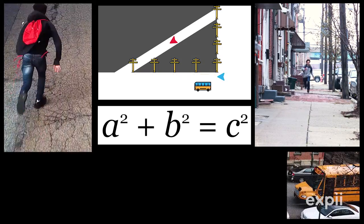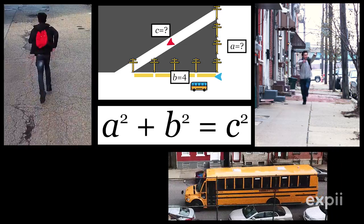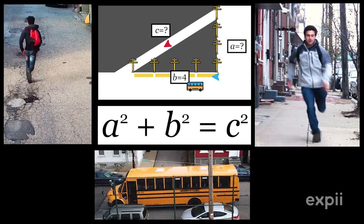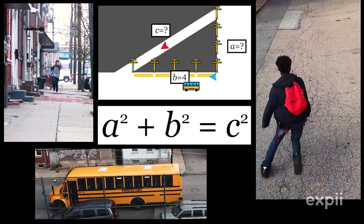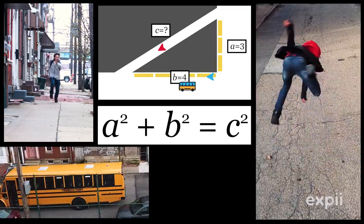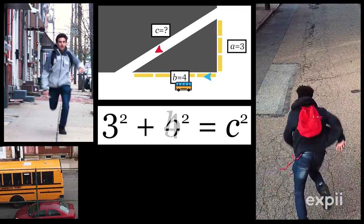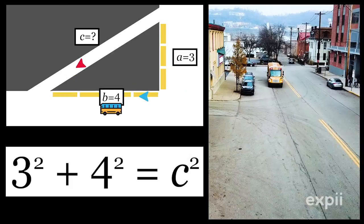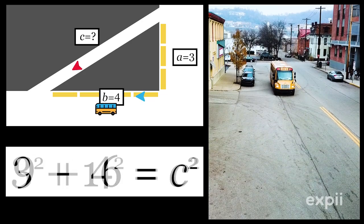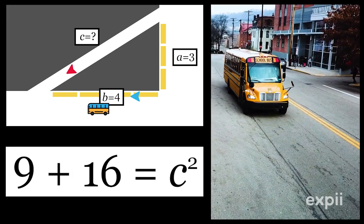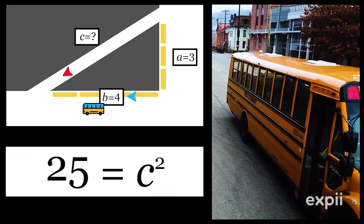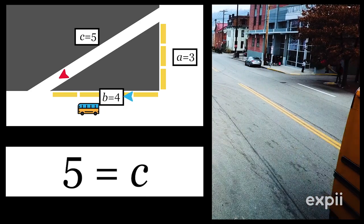I know there are four spaces between the telephone poles on the street the bus is currently on, and the street the bus and I were just on has three spaces. So a would be 3, b is 4, and in the Pythagorean Theorem, a squared plus b squared equals c squared. If I add them together, it makes 25, and the square root of 25 is 5.